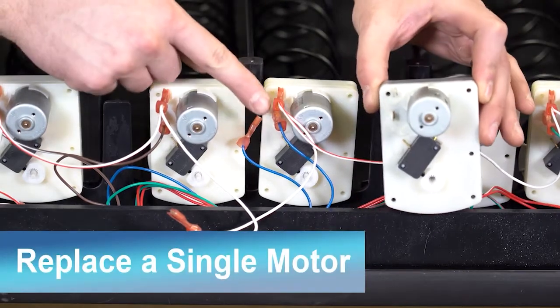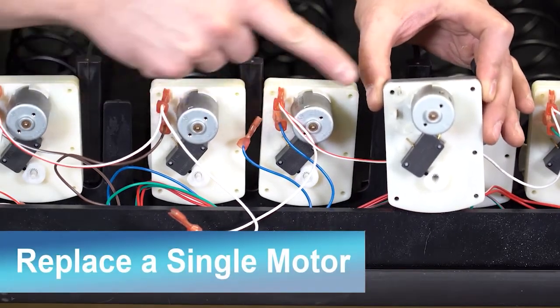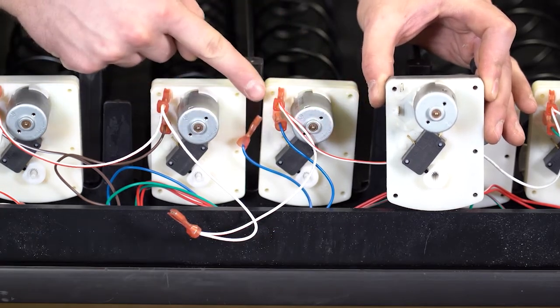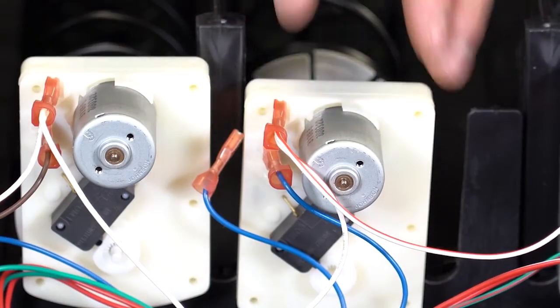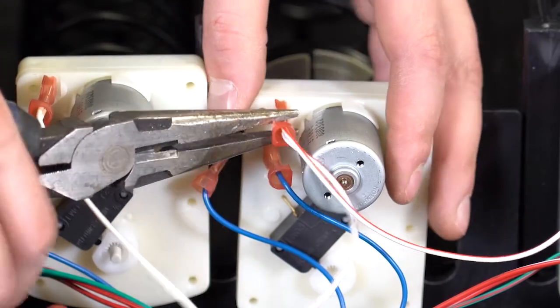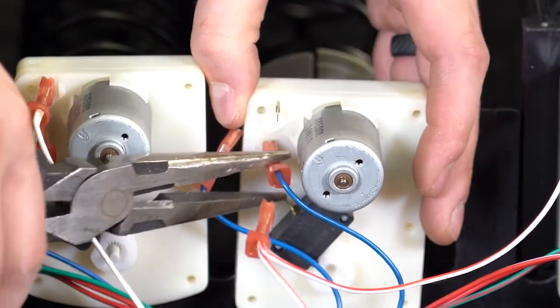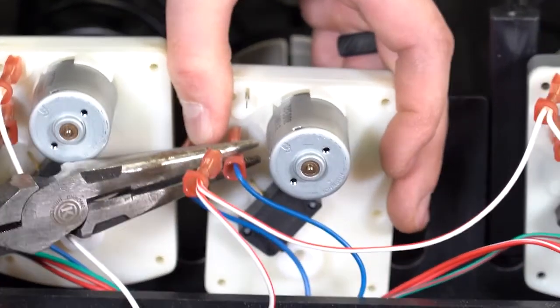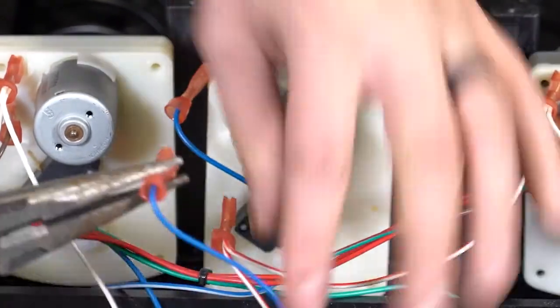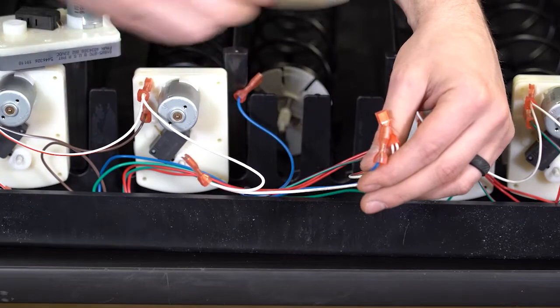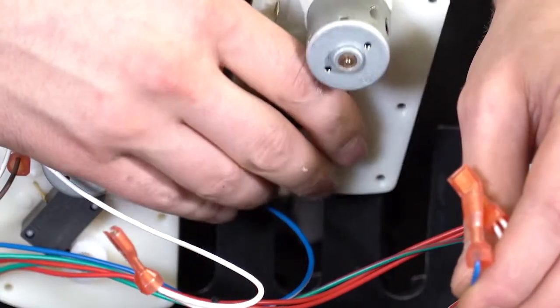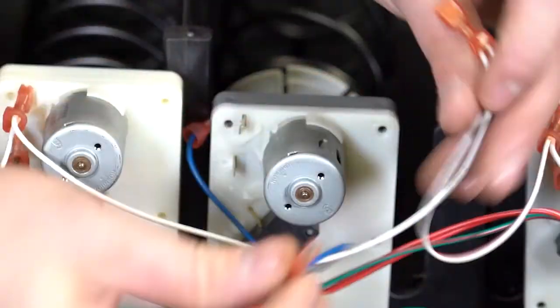When replacing the motor, make sure the wires are connected to the new motor correctly. Unhook the motor from the coupler and disconnect the wires from the motor with a set of pliers. Then slide the motor off the tray.